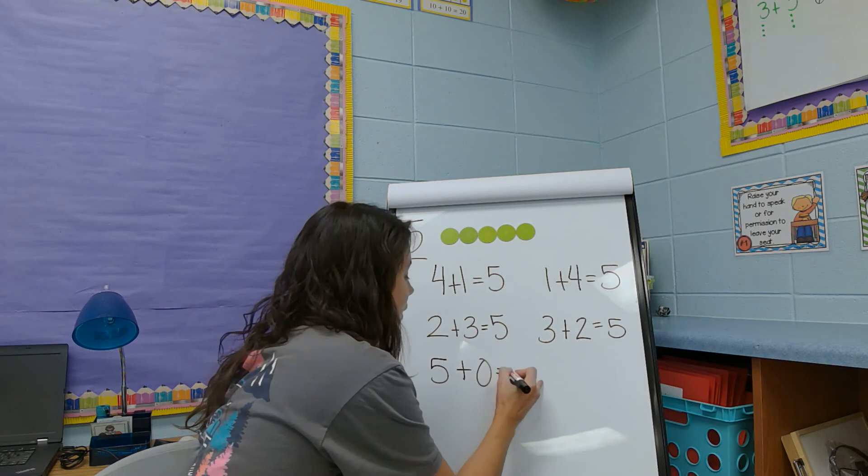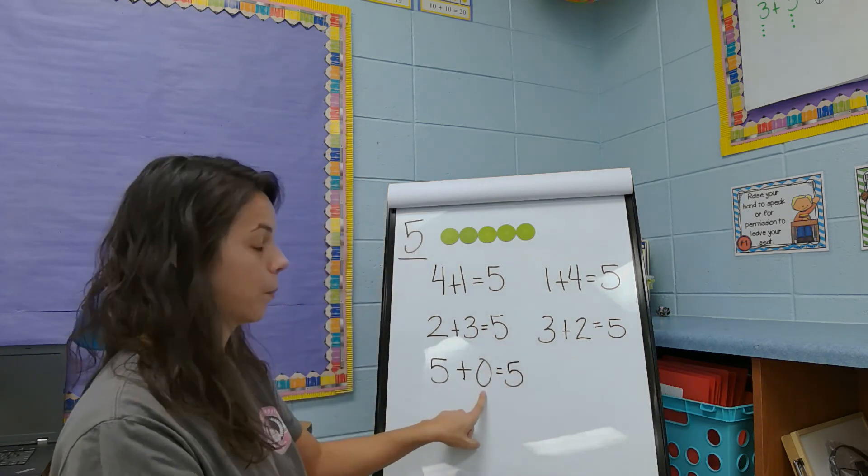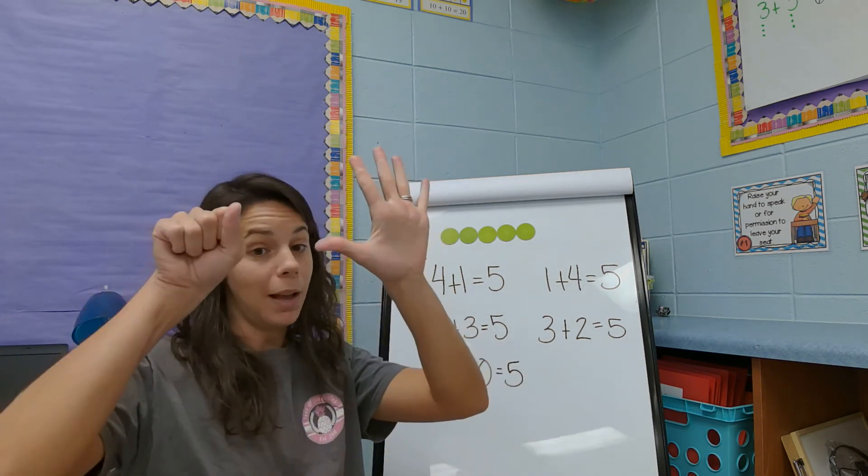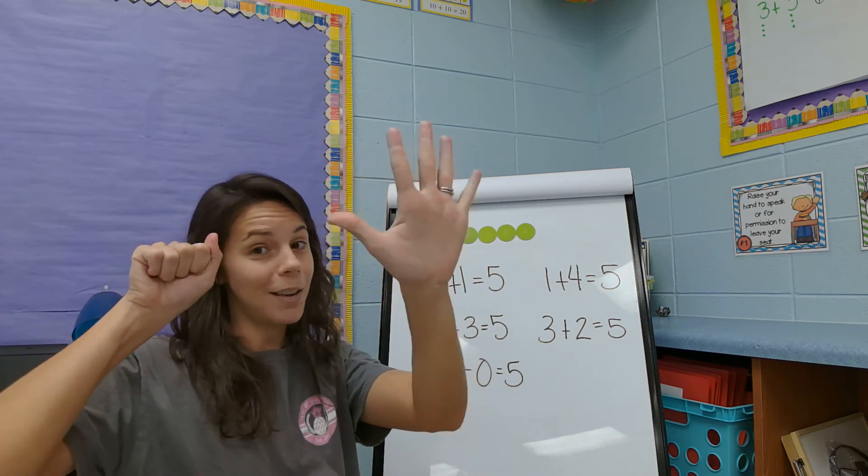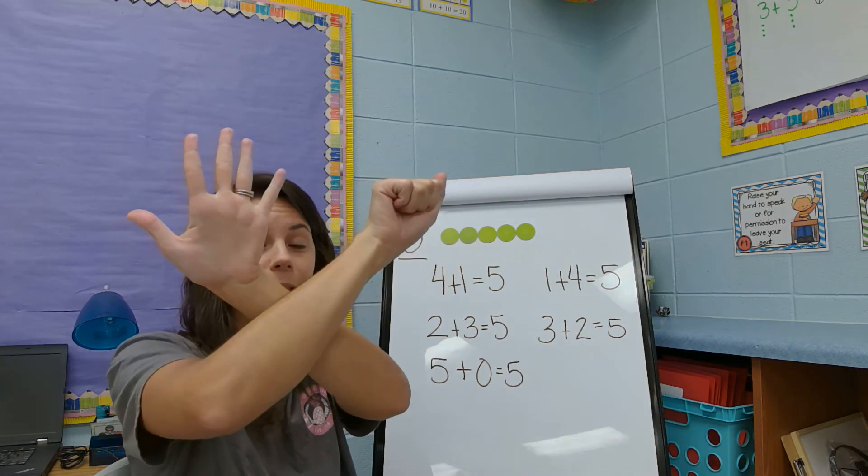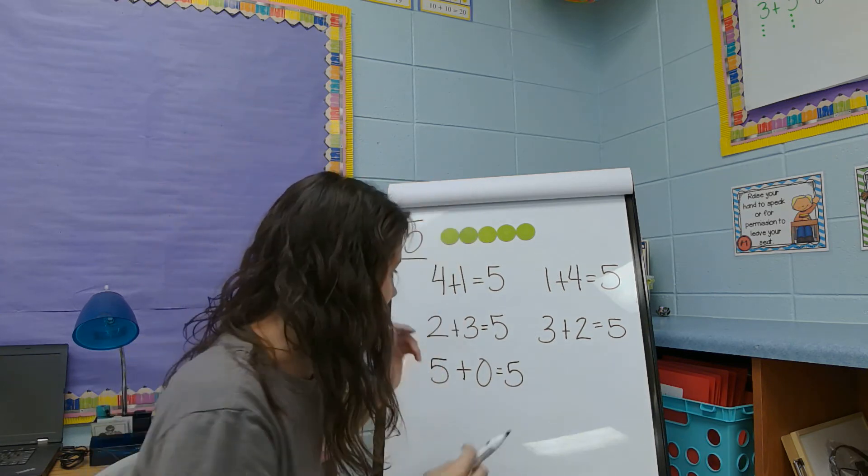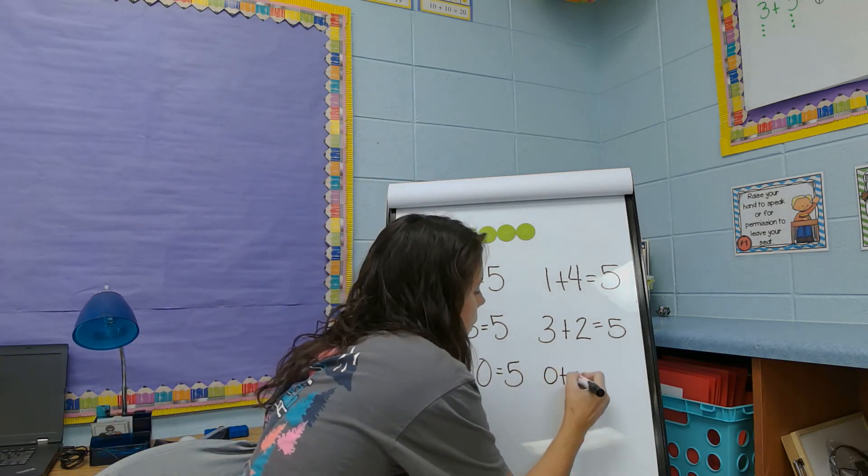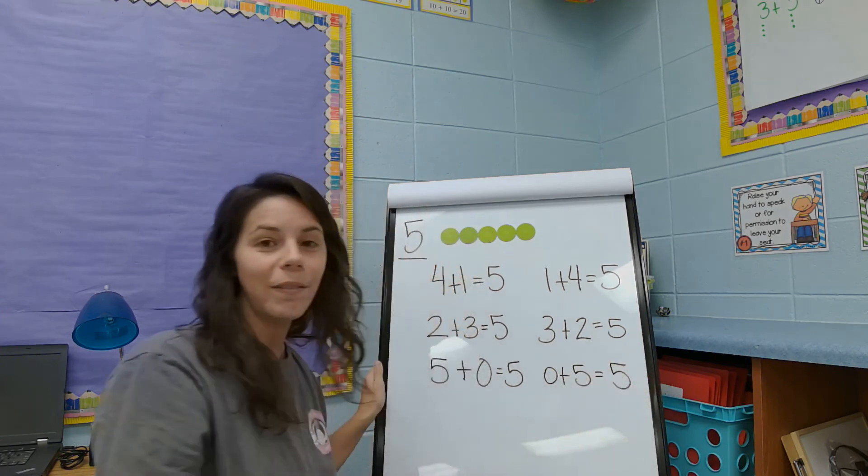And that still equals five. Five plus zero more still equals five. Well, what if I was to swap those around? Zero plus five. Still equals five.